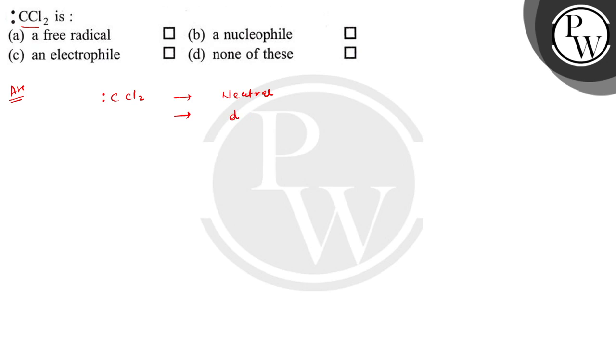It is divalent and has two monovalent atoms. This is having two monovalent atoms and two non-bonded electrons. So if you see, the electron pair around the central carbon is six, and therefore it is electron deficient.